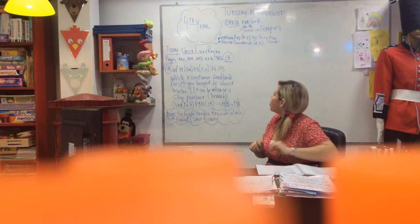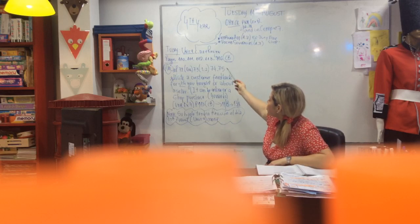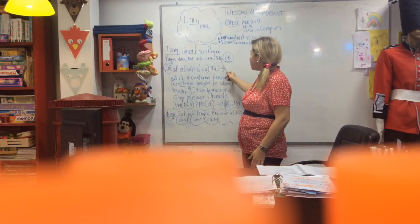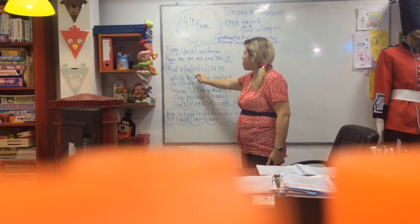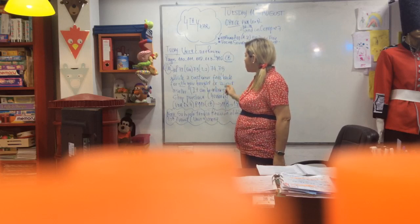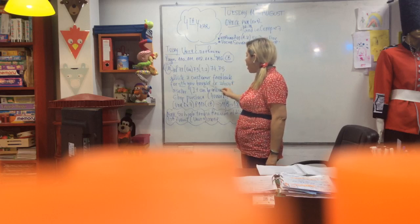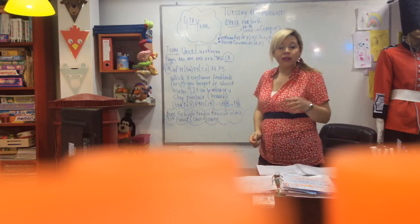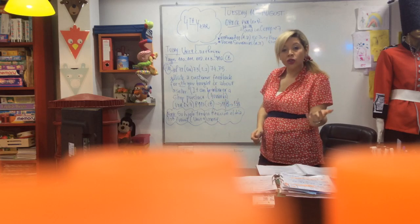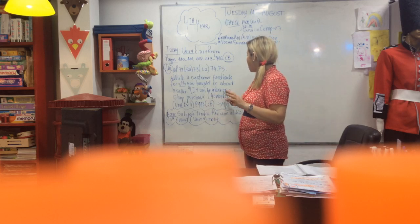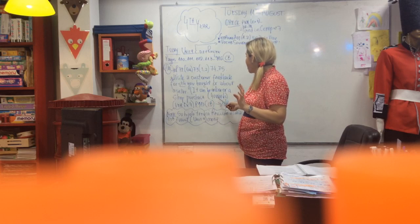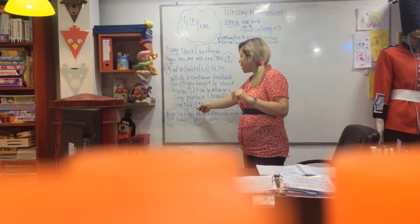Then we are going to move on to Unit 9. We are going to do pages 110, 111, 112, 113, and 116 — and from the activity book, pages 72, 73, 74, and 75. You also have to write a customer feedback for something you bought or about a seller — online or a shop purchase — 40 words.